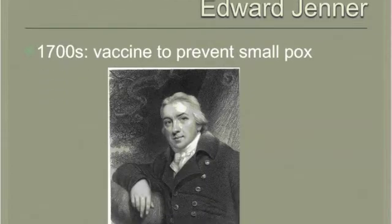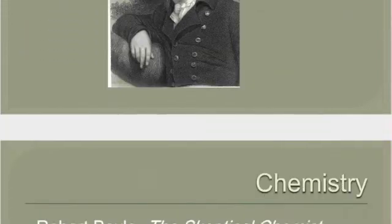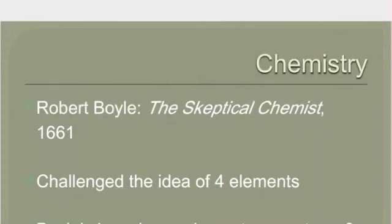Moving on — Edward Jenner, in the late 1700s. He was the first to come up with vaccines, and his vaccine to prevent smallpox really saved millions of lives over history. He is considered the father of immunology — making people immune to certain diseases. He was from England and was a member of the Royal Society.